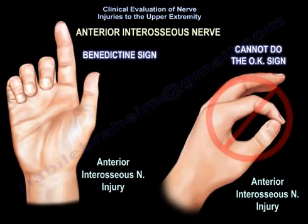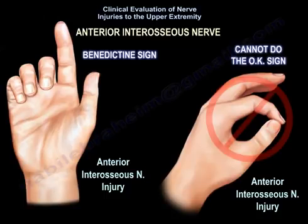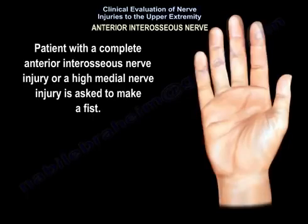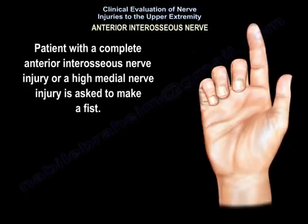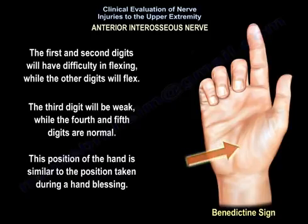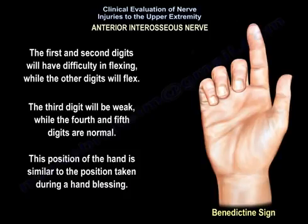Anterior interosseous nerve injury: a patient with a high median nerve injury or anterior interosseous nerve injury can present with two signs — the Benediction sign and inability to do the OK sign. When asked to make a fist, the first and second digits will have difficulty flexing while digits four and five will flex, and the third digit appears weak. The hand assumes the Benediction sign, or sign of benediction, which is the position during hand blessing.